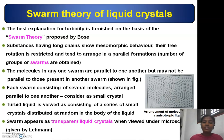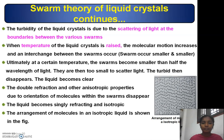Each swarm consists of several molecules arranged parallel to one another and is considered a small crystal. The turbid liquid is viewed as consisting of a series of small crystals distributed at random in the body of the liquid. Swarms appear as transparent liquid crystals when viewed under a microscope, as noted by Lehmann. The turbidity of liquid crystals is due to the scattering of light at the boundaries between the various swarms.